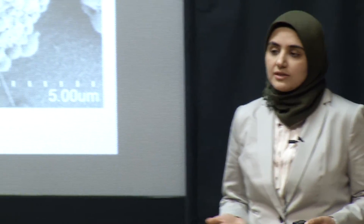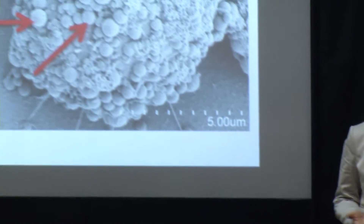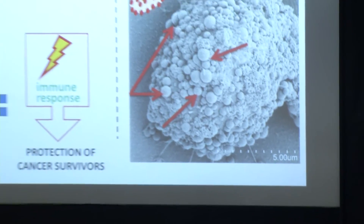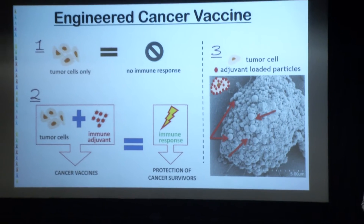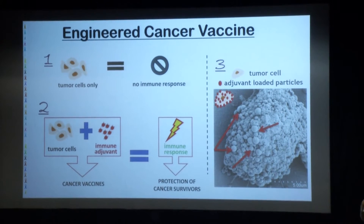Cancer vaccines tag the tumor cells, put red flags on the tumor cells, telling the immune system: hey, this is dangerous, you need to do something about it. How do they do that? They do it by incorporating molecules called immune adjuvants. And these immune adjuvants are simply danger signals — red flags that the immune system will never miss. It will always respond to them because it perceives them as an infectious entity.